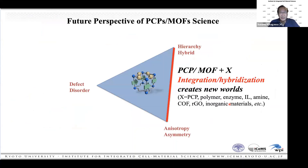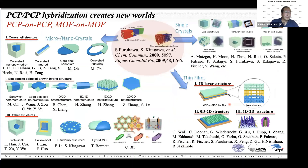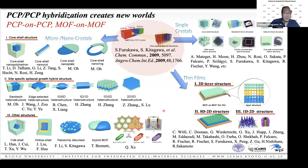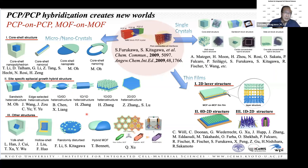For hybridization and integration, we first synthesized core-shell type crystals more than ten years ago. After that, there have been so many forms of PCP-on-PCP: various crystal structures including core-shell, site-specific epitaxial growth, thin films, and other structures. Many researchers have contributed greatly to this chemistry. What is very important to keep in mind is the interface: between two or three crystals in a multi-crystal system, controlling the interface is very important.